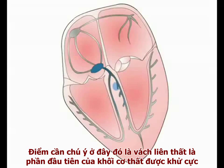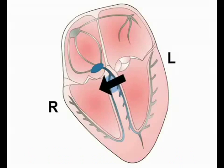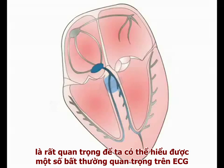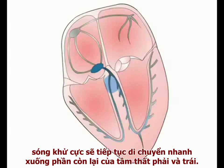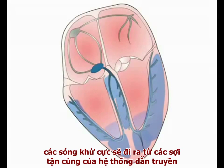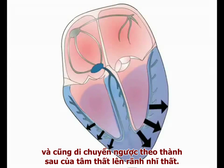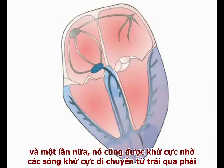We should note at this point that the interventricular septum is the first part of the ventricular muscle mass to depolarize, and it does so by movement of current across the septum from the left towards the right bundle branch. We'll see later that this early left-to-right movement of current in the septum is crucial to understanding several important ECG abnormalities. As septal depolarization is taking place, the depolarizing wave begins to spread rapidly through the bulk of the left and right ventricles, from the endocardium outwards towards the epicardial surface, and also back along the ventricular wall to the atrioventricular groove. The final piece of muscle to depolarize is the upper part of the interventricular septum, and again this occurs by movement of current from left to right.